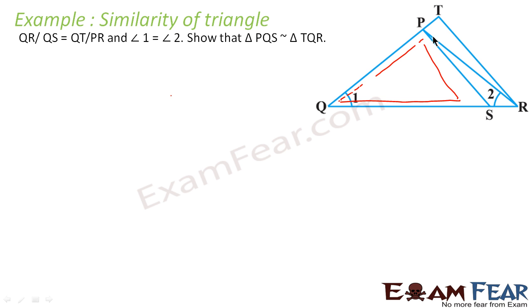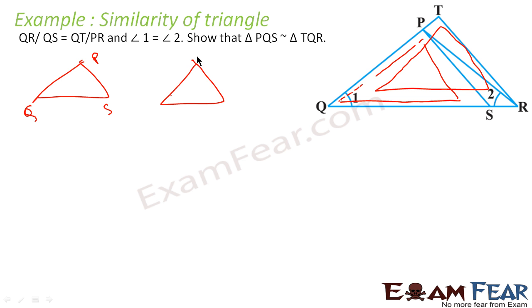Let's draw triangle PQS and triangle TQR. To prove both triangles are similar, we note that angle Q is equal to angle Q since it is the same angle. Now if we can prove that PQ/QS is equal to TQ/QR, then by SAS we can prove that the triangles are similar.